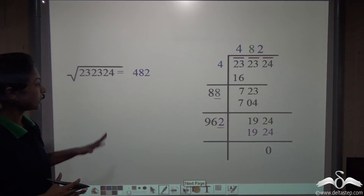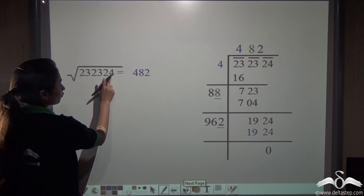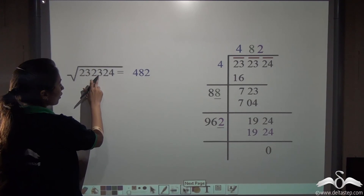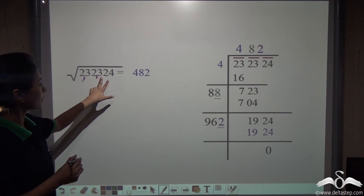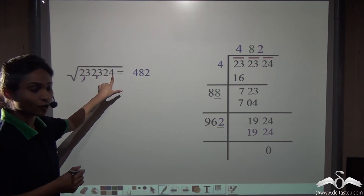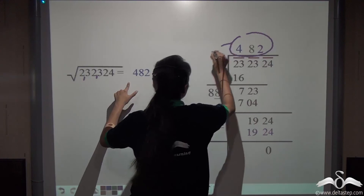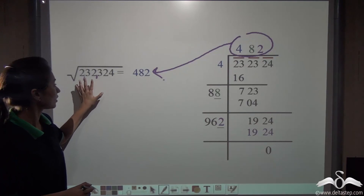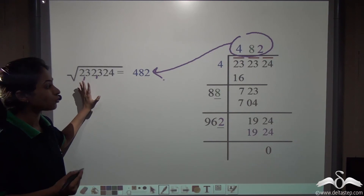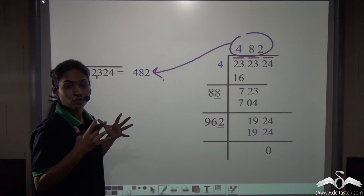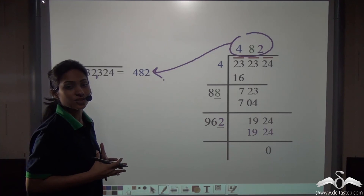So we can say that the square root of 232324 is 482. Now you know how to find the square root of a large number using the long division method.